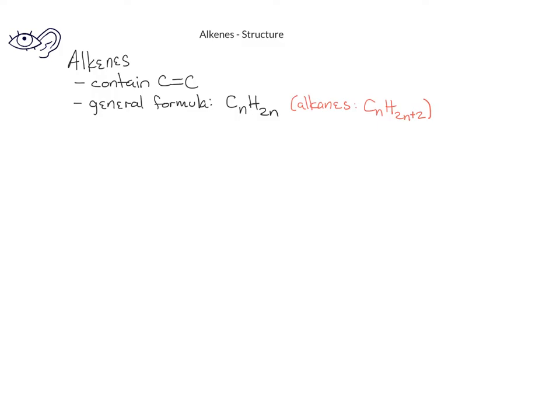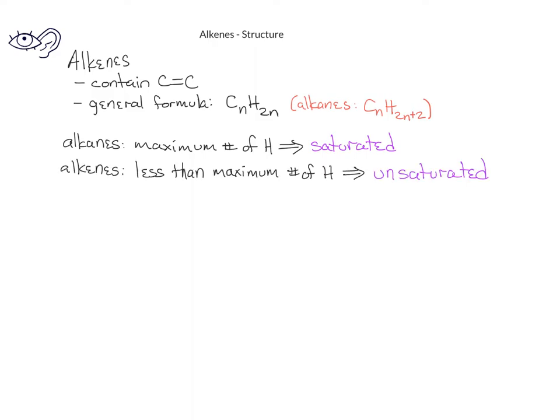Some other terms that you may have heard previously that refer to alkenes are based on the number of hydrogens present in the hydrocarbon. Alkenes have the maximum number of hydrogens based on the number of carbons. Therefore, we say that alkenes are saturated hydrocarbons. However, since alkenes have a carbon-carbon double bond, they have less than the maximum number of hydrogens, and we say that alkenes are unsaturated hydrocarbons.